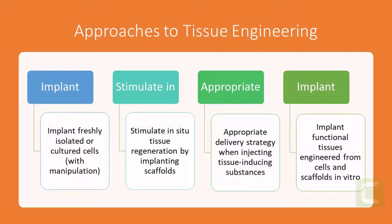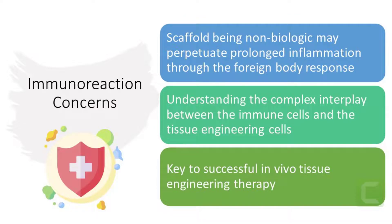The third is to implant functional tissues engineered from cells and scaffolds in vitro. This requires optimization of cell ratio and density, as well as mechanical and biochemical properties of scaffolds. All the approaches discussed above can lead to immunoreaction, depending on the cell source and the type of biomaterial used.